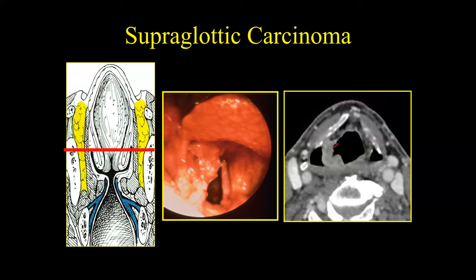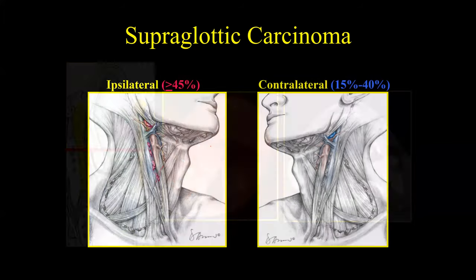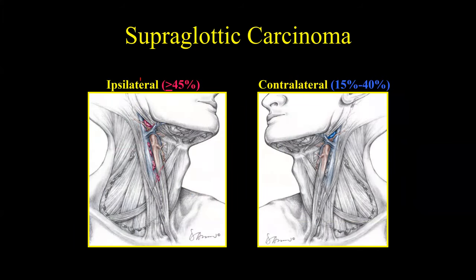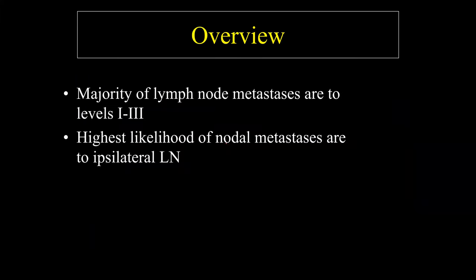For a supraglottic carcinoma involving the right aryepiglottic fold, the ipsilateral level 2 and level 3 lymph nodes are most at risk — contralateral occasionally, but primarily ipsilateral. The pattern is consistent: the highest likelihood of nodal metastases are to the ipsilateral lymph nodes, and the majority of lymph node metastases involve levels 1 through 3, with level 2 most commonly involved.